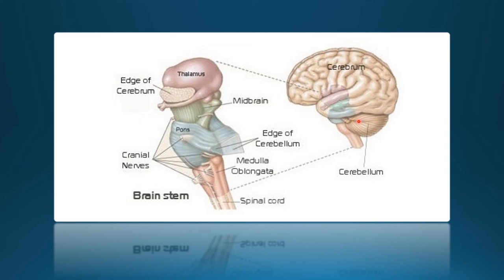Each hemisphere of the cerebellum controls the same side of the body — so unlike the cerebrum, it is ipsilateral. Problems with the cerebellum can lead to ataxia, which involves uncoordinated and inaccurate movements. The Romberg test can help detect deficiencies in cerebellar functioning.